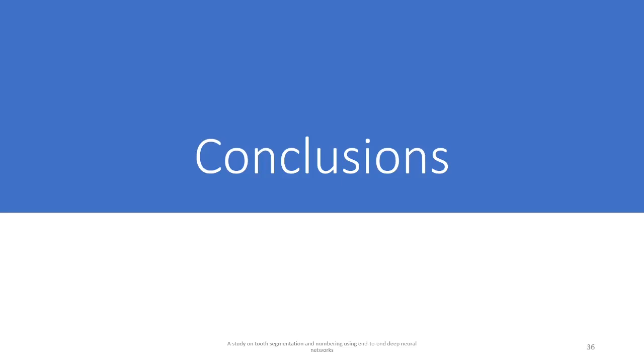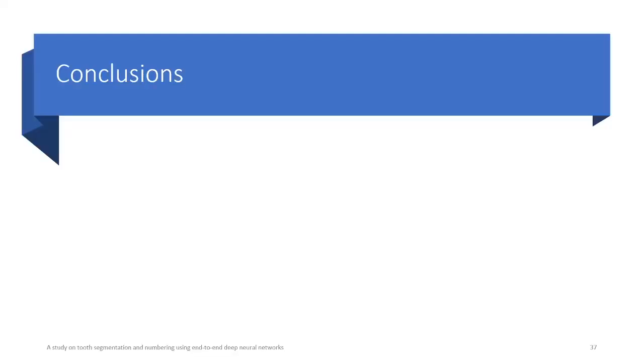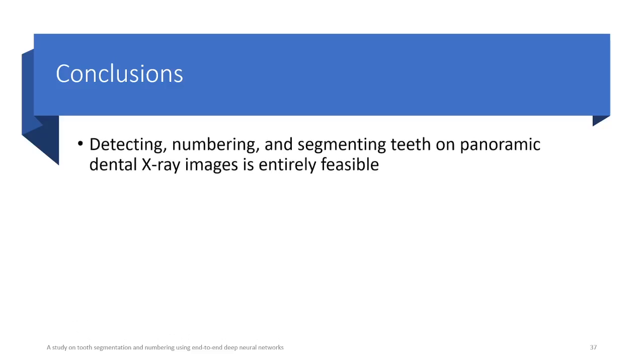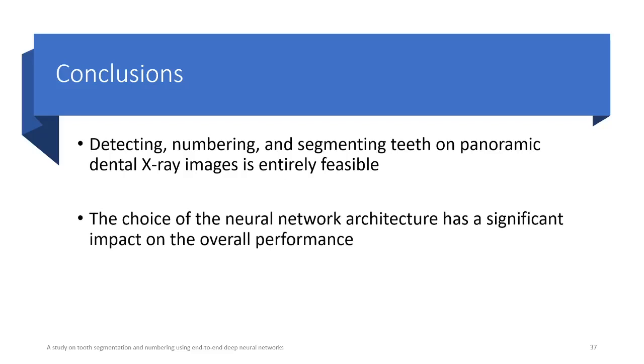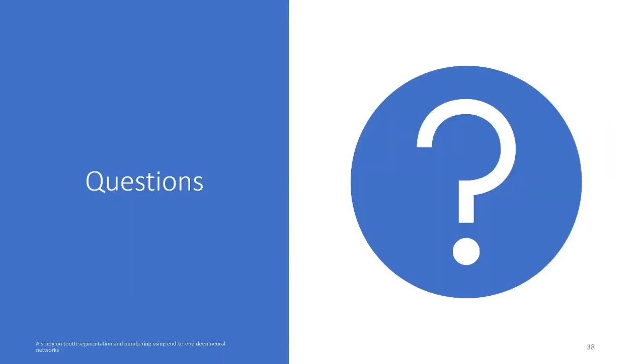Based on these results, I'll list the conclusions we came up with. We concluded that detecting, numbering, and segmenting teeth on panoramic dental X-ray images is entirely feasible by using end-to-end deep neural networks. The choice of the neural network architecture, however, has a significant impact on the overall performance. And the PANet had the best performance in our experiments. With all that said, I finished my presentation, and now I'm open to questions.